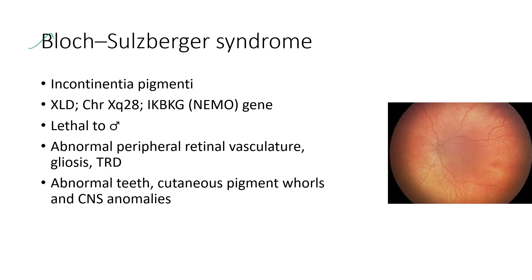Next is Bloch-Sulzberger syndrome, also known as incontinentia pigmenti. It is an X-linked dominant disorder and is lethal to males. The ocular features include abnormal peripheral retinal vasculature, gliosis, and tractional retinal detachment. The systemic features include abnormal teeth, cutaneous pigment folds, and CNS anomalies.